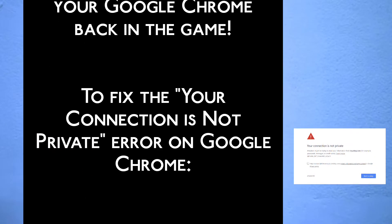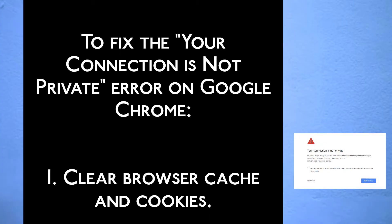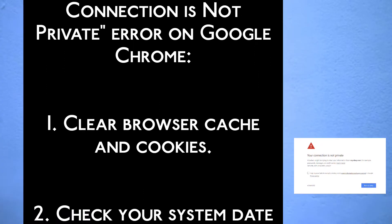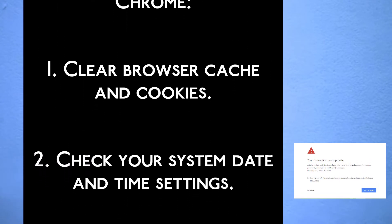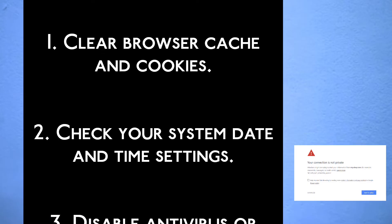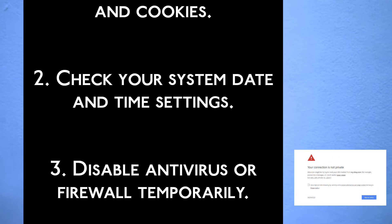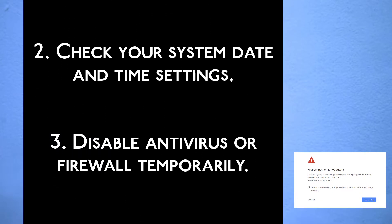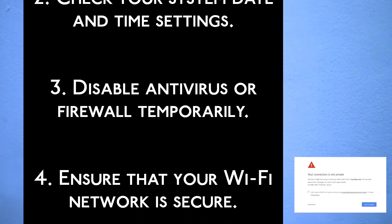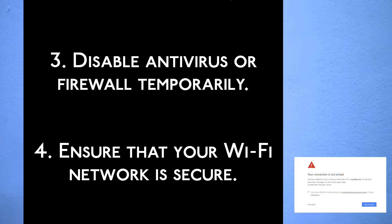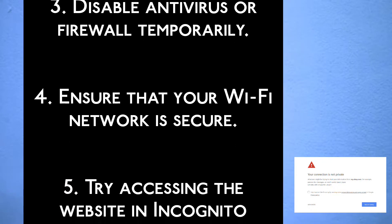To fix the 'Your connection is not private' error on Google Chrome: Step 1, clear browser cache and cookies. Step 2, check your system date and time settings. Step 3, disable antivirus or firewall temporarily. Step 4, ensure that your Wi-Fi network is secure.